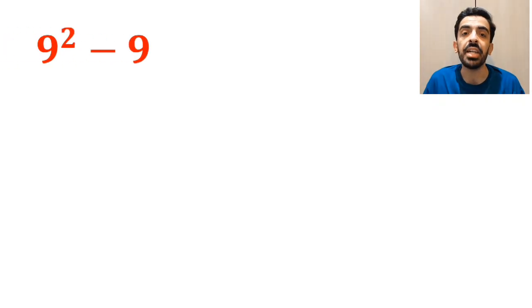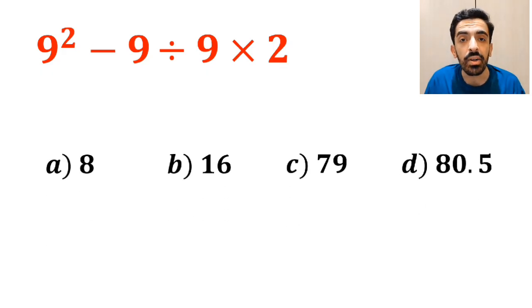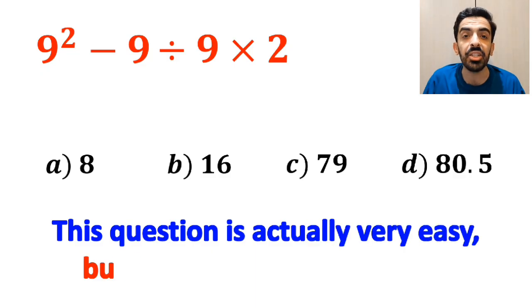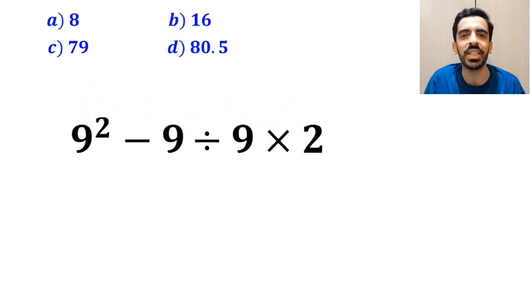What is the value of the expression 9 squared minus 9 divided by 9 times 2? Which option do you think is the correct answer to this question? This question is actually very easy, but it tricks almost everyone.